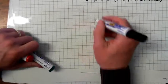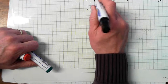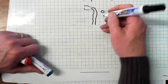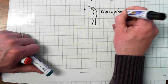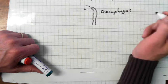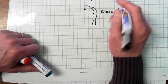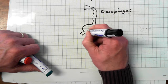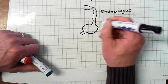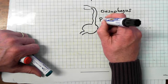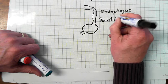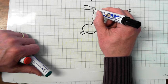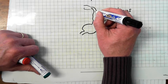The food travels down from your mouth, down a pipe called the esophagus — O-E-S-O-P-H-A-G-U-S. The esophagus has muscular walls, and the muscular walls contract, pushing the food down to the stomach. The contraction of the muscular walls is called peristalsis. Peristalsis is where the muscular walls of the esophagus contract, pushing the food down to the stomach.